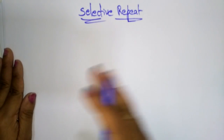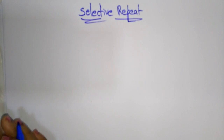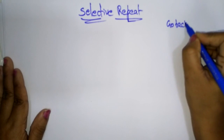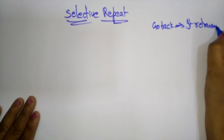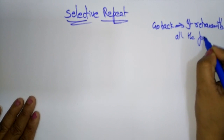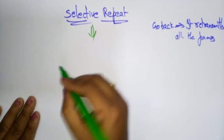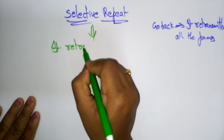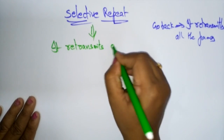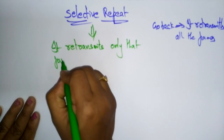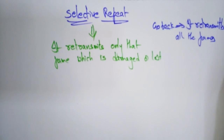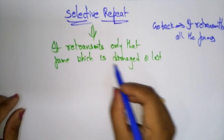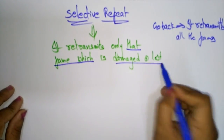The Selective Repeat protocol retransmits only that frame which is damaged or lost. So you can see the difference between Go-Back-N and Selective Repeat. In Go-Back-N, it retransmits all the frames after the damaged frame — it retransmits all the frames. But here in Selective Repeat, only the frame which is damaged or lost is retransmitted, whereas in Go-Back-N all frames will be retransmitted.